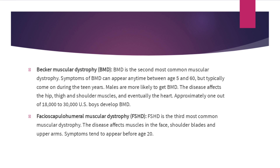Becker muscular dystrophy, or BMD, is the second most common muscular dystrophy. Symptoms can appear anytime between ages 5 and 60, but typically come on during the teen years. Males are more likely to get BMD. The disease affects the hip, thigh, and shoulder muscles, and eventually the heart. Approximately 1 out of 18,000 to 30,000 US boys develop BMD.